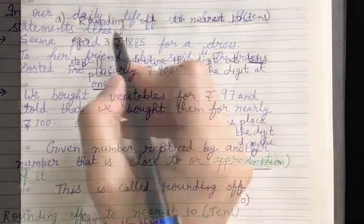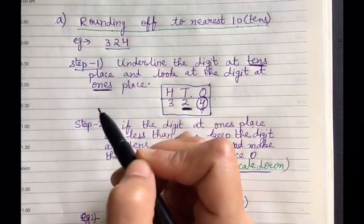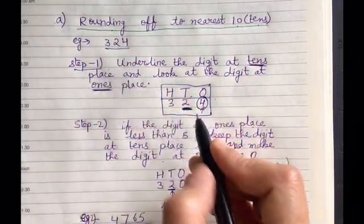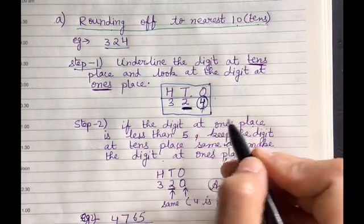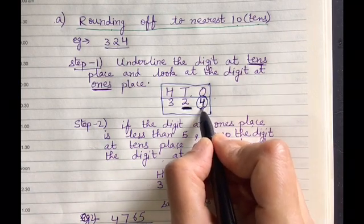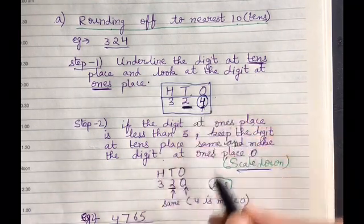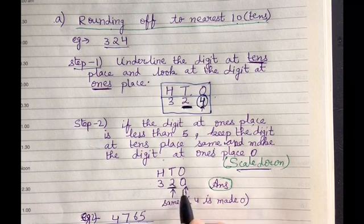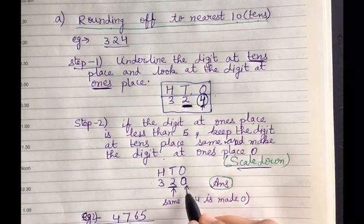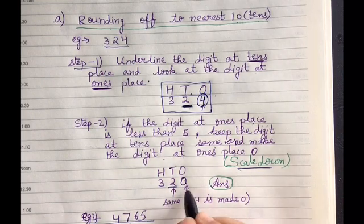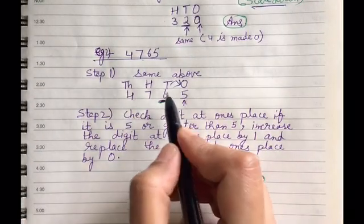Next, rounding off to the nearest tens. Let us take the example 324. Step 1: underline the digit at the tens place and check the digit at the ones place. The digit at the ones place is less than 5, so we keep the digit at the tens place the same and the digit at the ones place becomes 0. So the answer is 320.